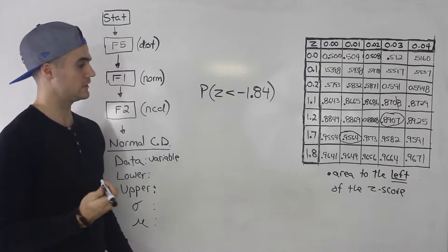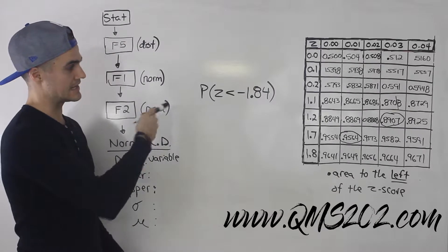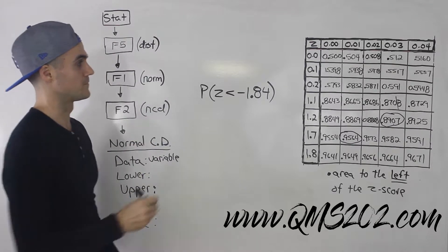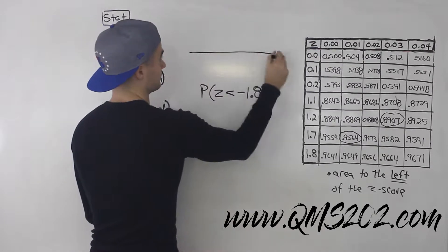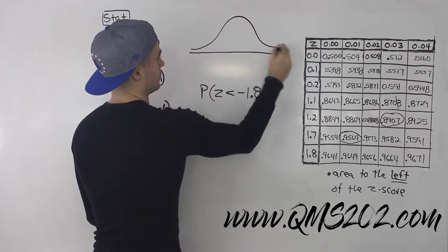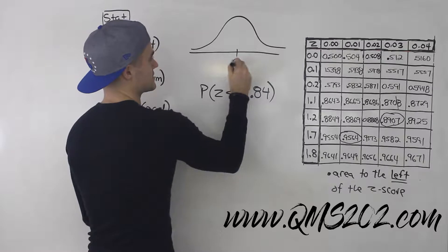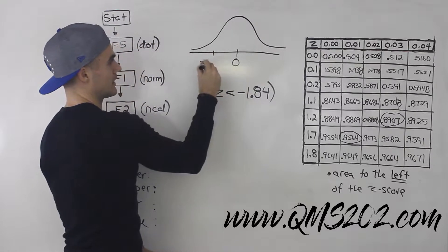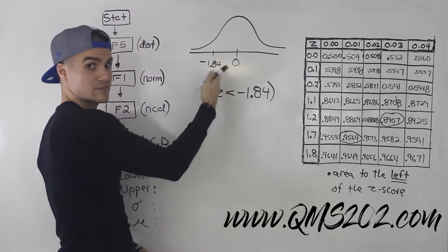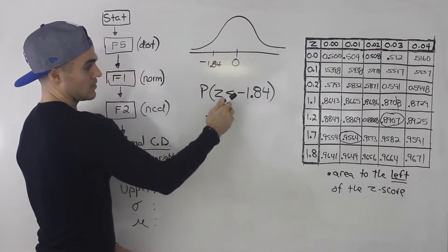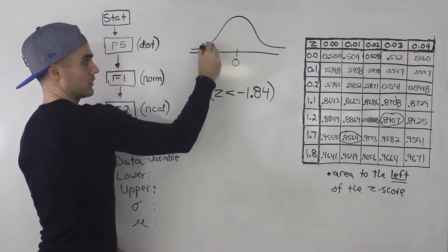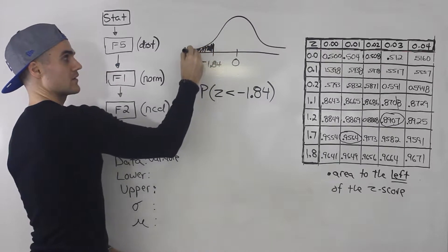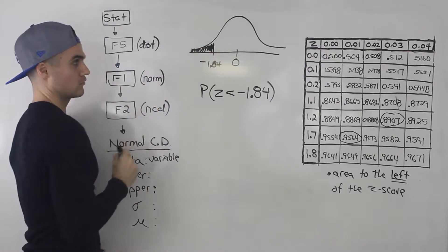Let's try another example. Let's find the probability that z is less than negative 1.84. So let's draw this out. We have zero in the middle, and negative 1.84 is to the left of zero. The probability that z is less than negative 1.84 — so we're looking for this area over here to the left.